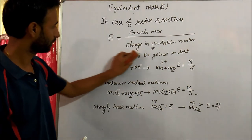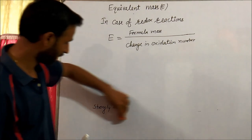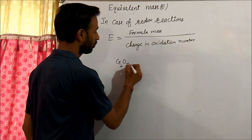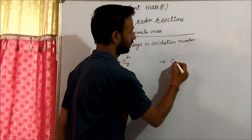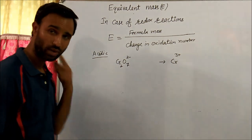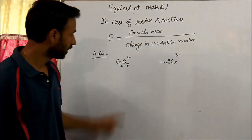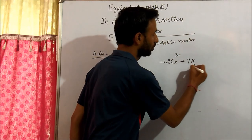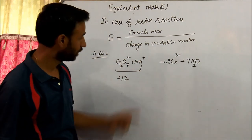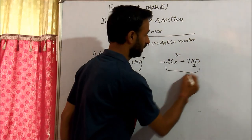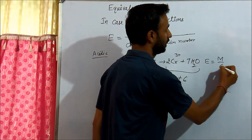In case of the dichromate ion: potassium dichromate gives Cr₂O₇²⁻. In acidic medium, it gives Cr³⁺. To balance: there are 2 chromium atoms, so we take 2Cr³⁺. There are 7 oxygens, so add 7H₂O and 14H⁺. Total charge on the left is 14 positive minus 2 negative, giving 12 positive. On the right, 2Cr³⁺ gives 6 positive. To balance, we add 6 electrons. Therefore, equivalent mass of the dichromate ion (K₂Cr₂O₇) is M by 6.